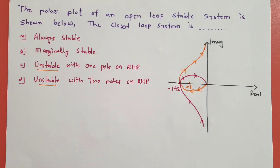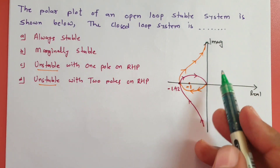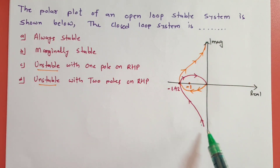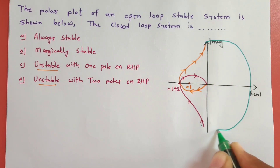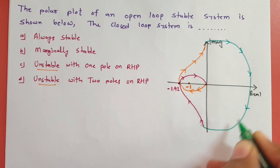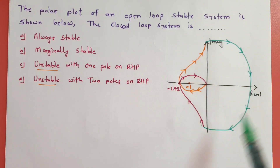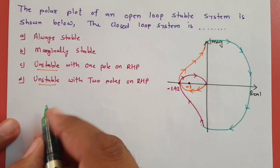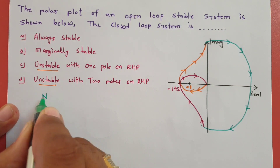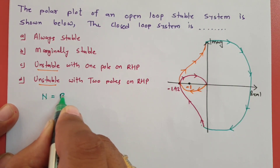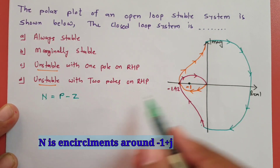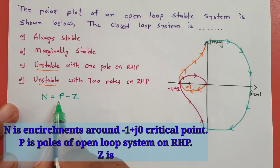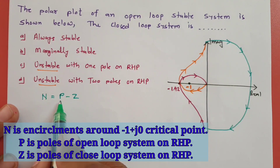Once we have the inverse polar plot, we construct the Nyquist contour — noting that the polar and inverse polar plots occur at +90° and −90°. The Nyquist contour has radius infinity, giving us the complete Nyquist plot. In this complete Nyquist plot, we focus on the critical point −1+j0. The Nyquist stability formula is N = P − Z, where N is encirclements around −1+j0, P is open loop RHP poles, and Z is closed loop RHP poles.